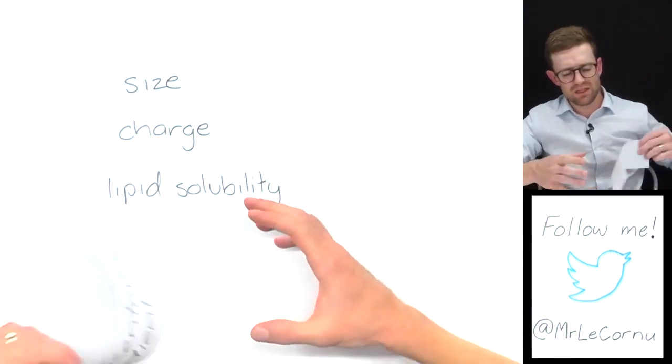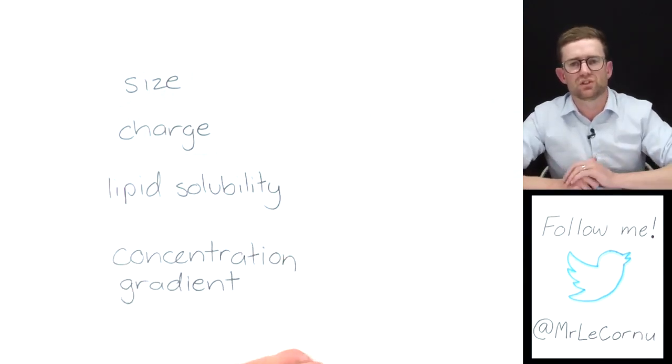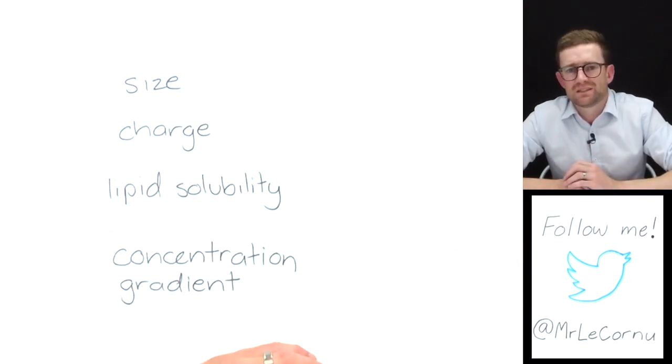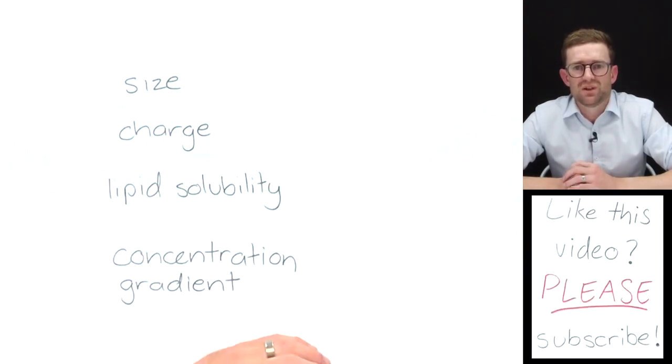And finally, one we've already talked about is concentration gradient. Moving with a concentration gradient is a passive process. Moving against is an active process. So I hope this has helped. Thanks very much for watching and we'll see you next time.